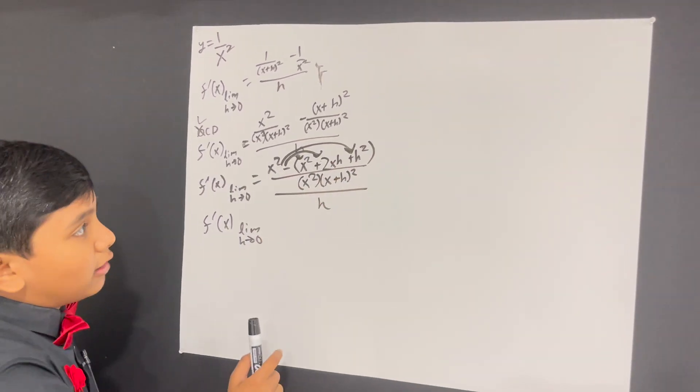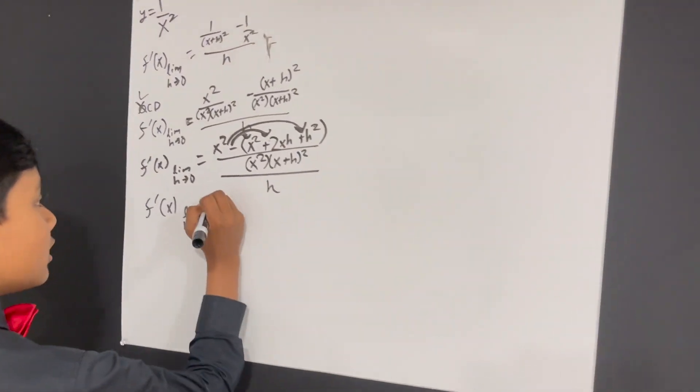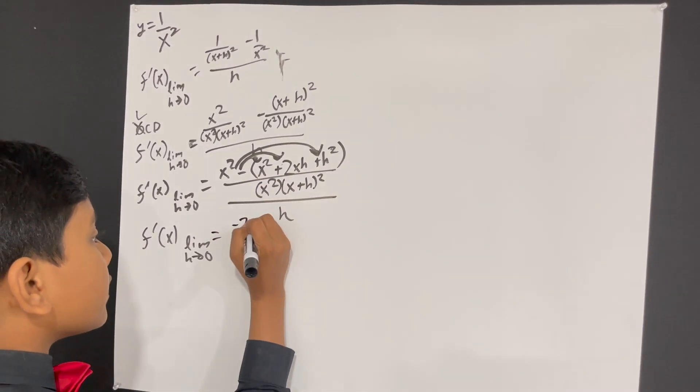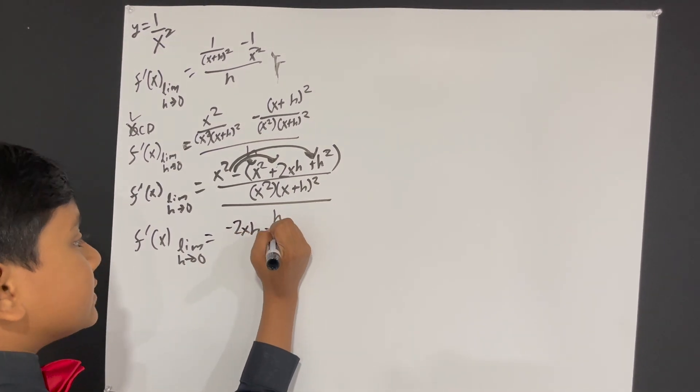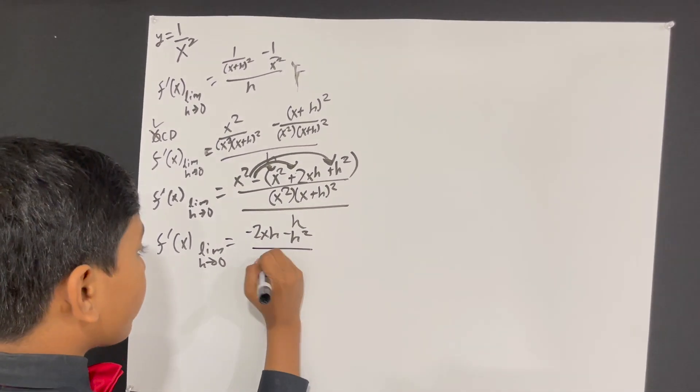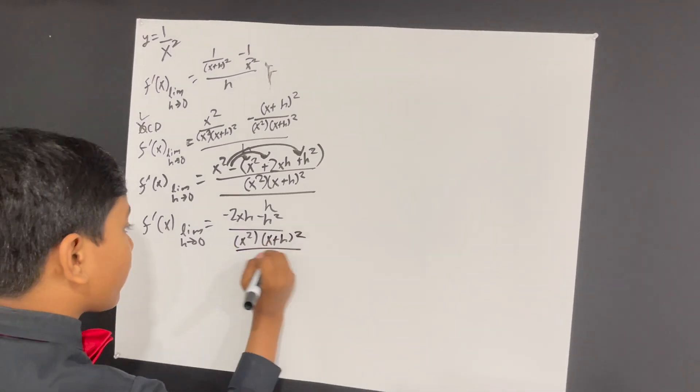Well, no, my friend, you're wrong once again. Man, sucks for you. Because, it's actually x squared minus x squared, and you're left with negative 2xh minus h squared. Over x squared times x plus h squared over h.